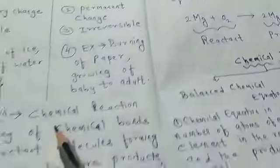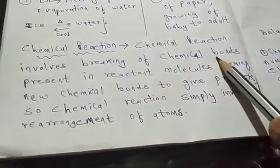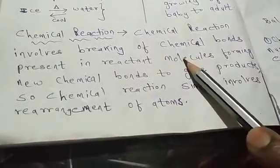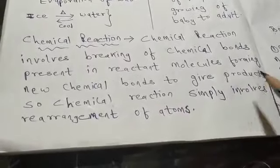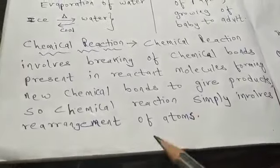So, chemical reaction involves breaking of chemical bonds present in reactant molecules, forming new chemical bonds to give products. So, chemical reaction simply involves rearrangement of atoms.